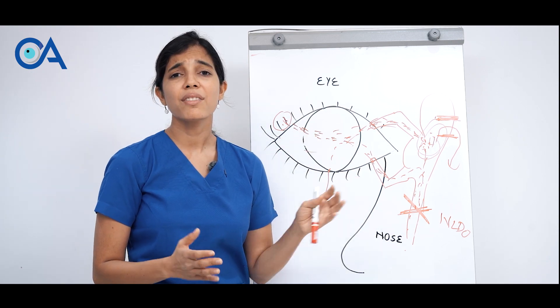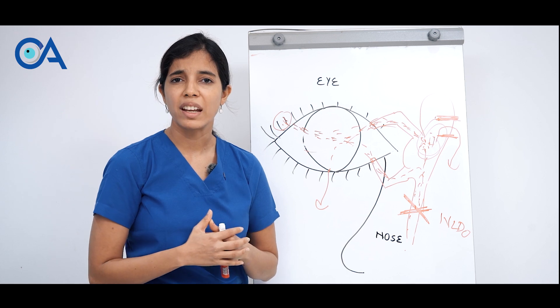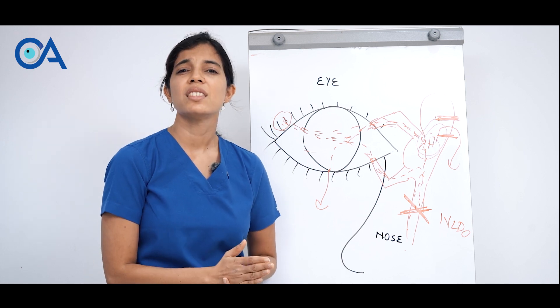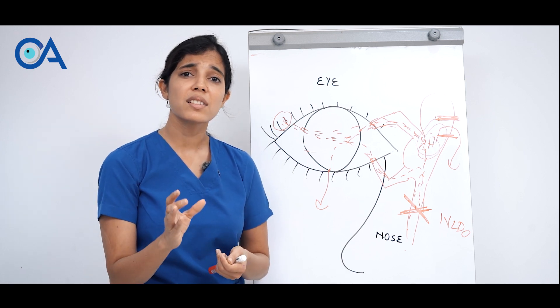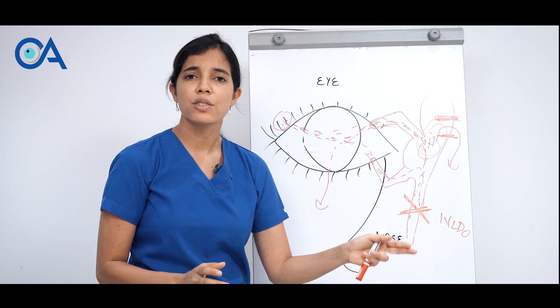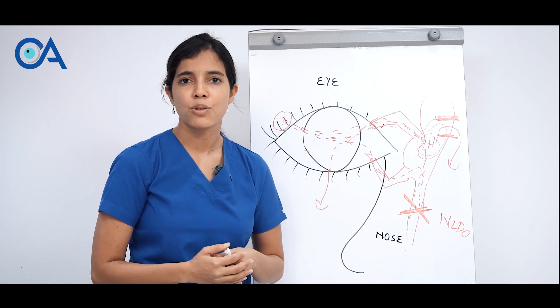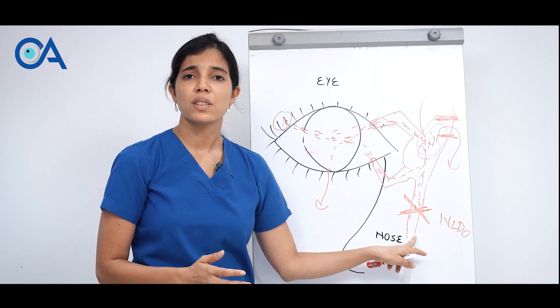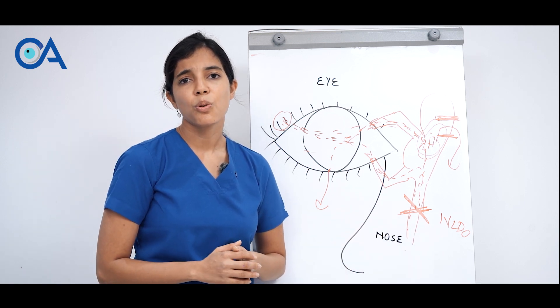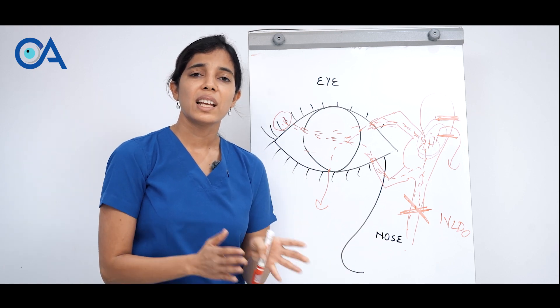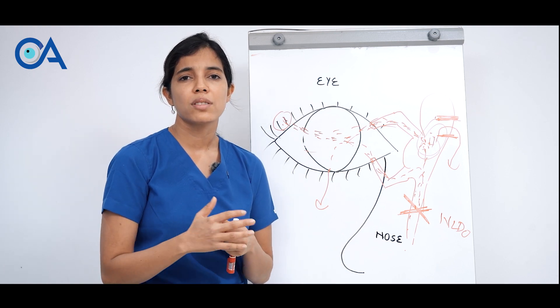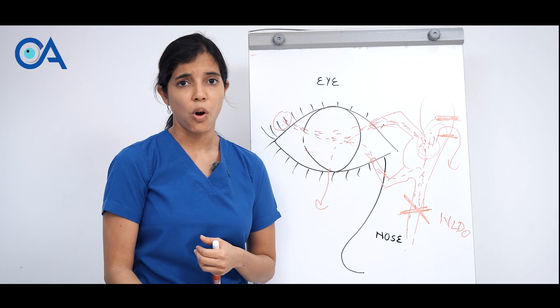If you have problem of persistent watering you need to first visit an oculoplasty specialist to understand which type of blockage you have and whether this surgery is indicated in your case or not. If you are diagnosed with this problem you must undergo DCR surgery either endoscopically or externally based on what your doctor suggests and what you want.